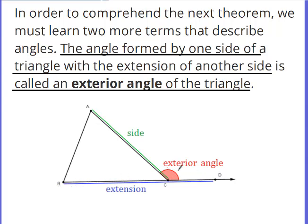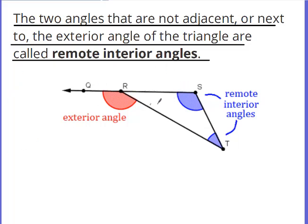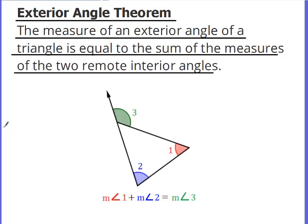If I extend this side and it makes an angle on the outside of the triangle with this one, this is called an exterior angle. The two remote interior angles are going to equal this exterior angle. The two angles that are not adjacent to — not beside, not connected to — the exterior angle of the triangle are called remote interior angles. So these two angles of the triangle that do not touch the exterior angle are the remote interior angles.